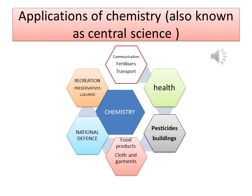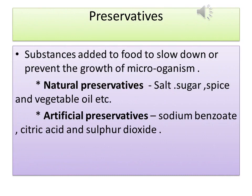Chemistry is also known as central science. It plays a very important role in so many areas like communication, fertilizers, transport, health, pesticides, building materials, food products, clothes, national defense, recreation, preservatives, luxuries, and more. Preservatives are substances added to food to slow down or prevent the growth of microorganisms like bacteria and viruses, which destroy food. Preservatives are of two types: natural preservatives and artificial preservatives. Natural preservatives are easily available in our kitchen — like salt, sugar, spices, and vegetable oil. Artificial preservatives are made from chemicals like sodium benzoate and citric acid.